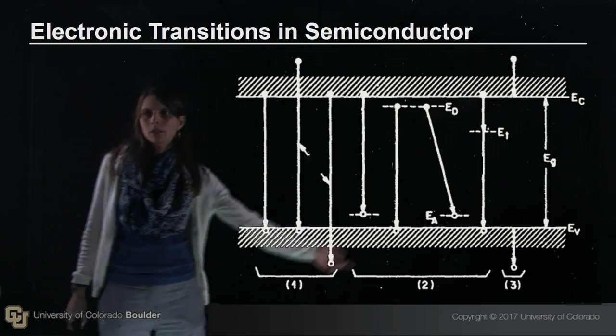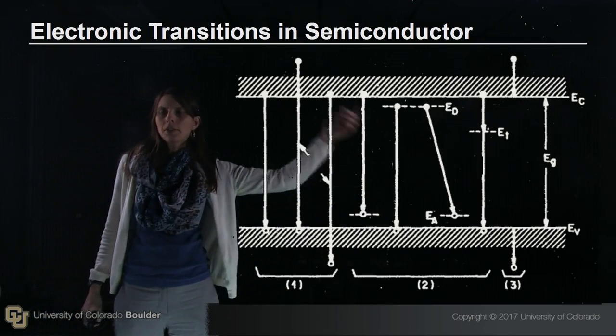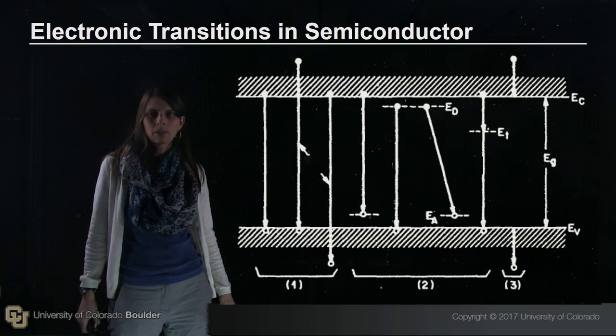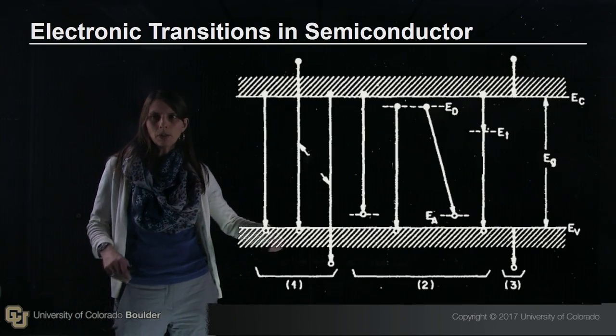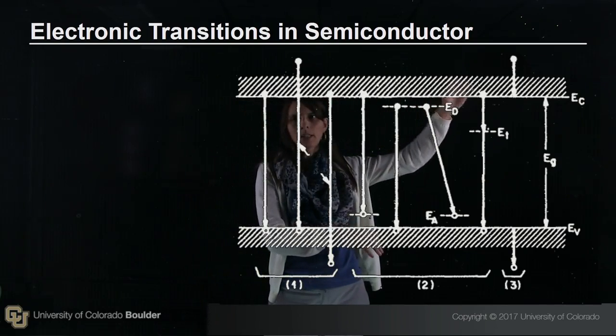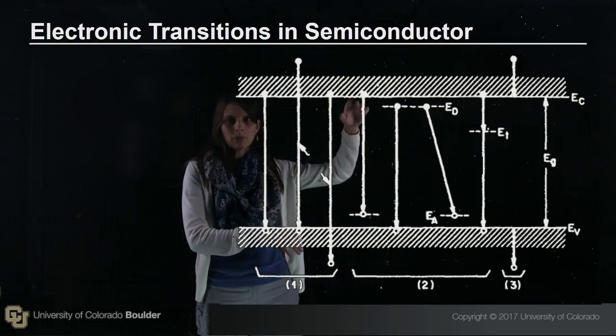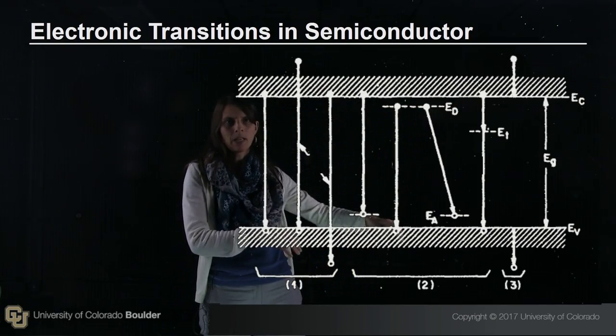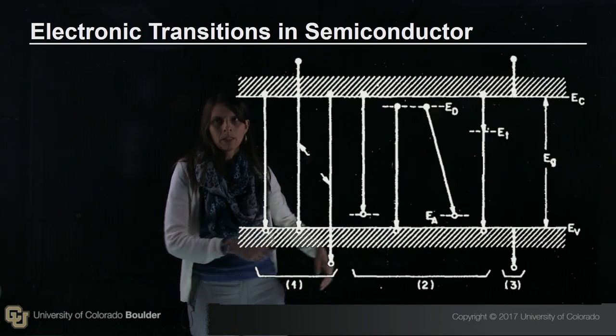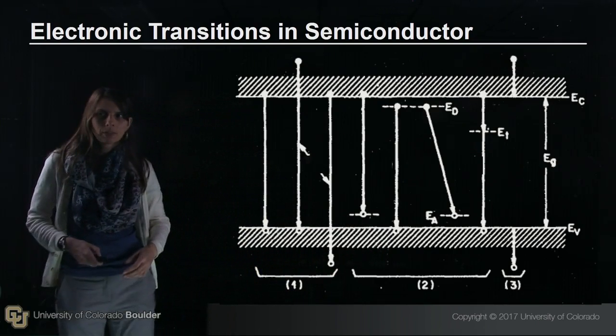What you're looking at here is a diagram of all the different ways you can get electronic transitions in a semiconductor between an electron and a hole. Some of them favor light emission, these ones bracketed by one, but here you're recombining from a defect to the band edge, so it's much more unlikely that you'll get light emission. These are some of the processes we'll consider.